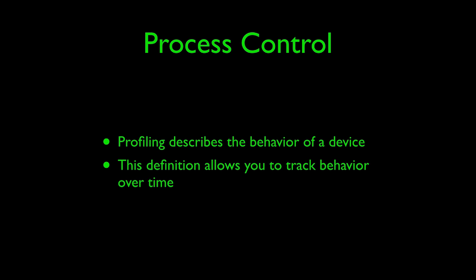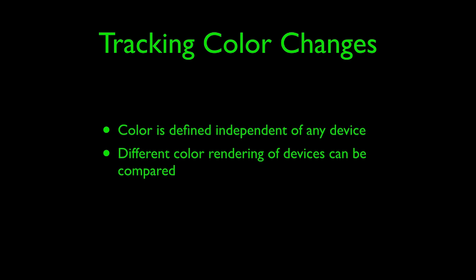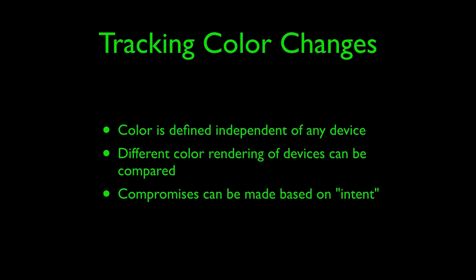We cannot calibrate anything properly if we cannot tell how it is changing. Because devices are never perfect and will always change over time regardless of hardware calibration, we need some method of describing how each device represents color even in a changed state. In order to achieve this tracking, we need a way to define colors independently from any device — then and only then can we compare the color rendering from one device to another. Once we can accurately compare colors between devices, we can decide how to compromise on the final color rendering to accommodate our intent.